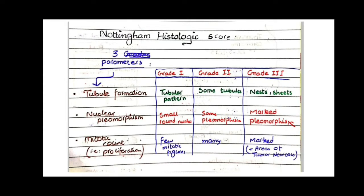These are the grades of breast cancer classified according to the Nottingham Histological Score. Remember the three parameters: tubule formation, nuclear pleomorphism, and mitotic count.